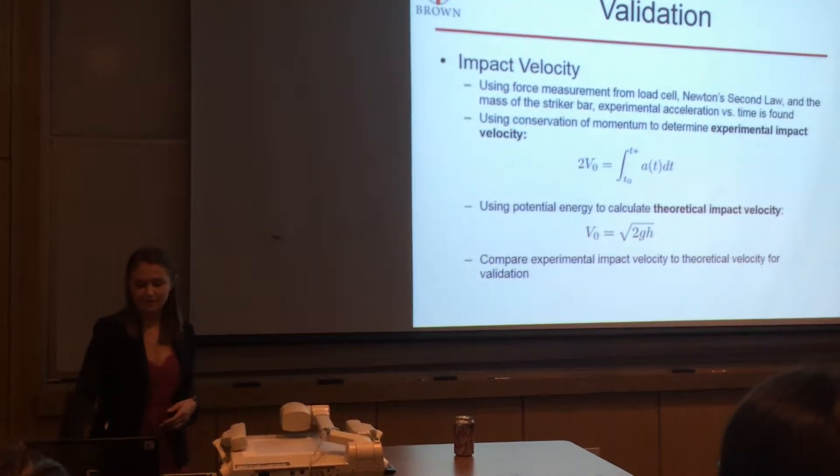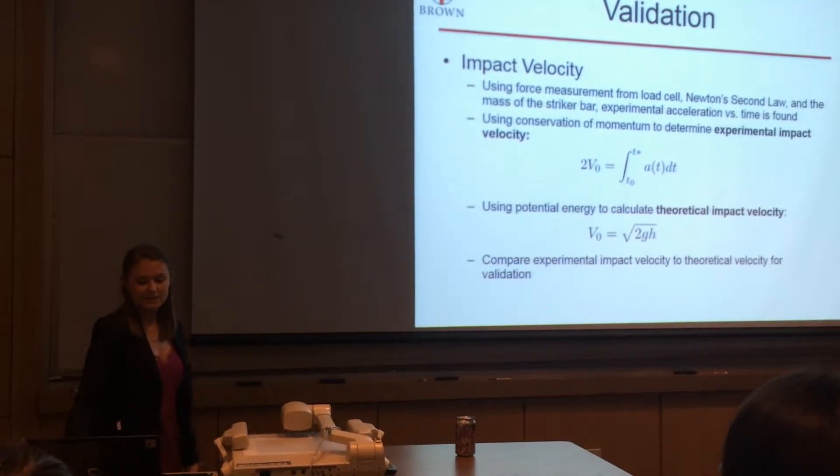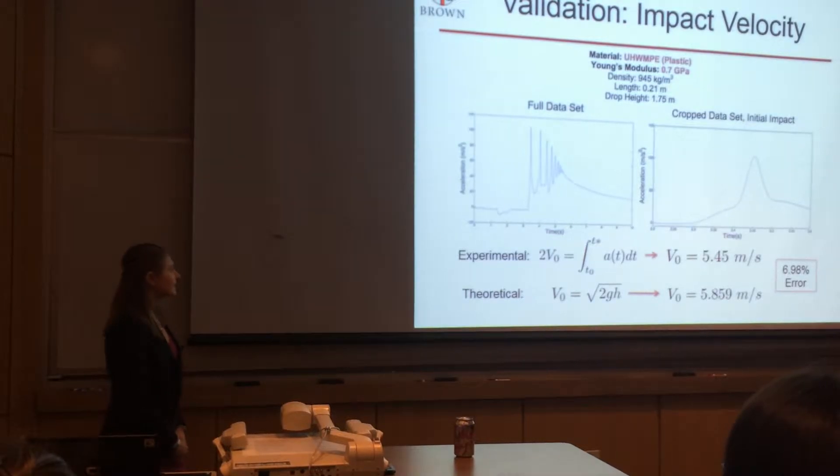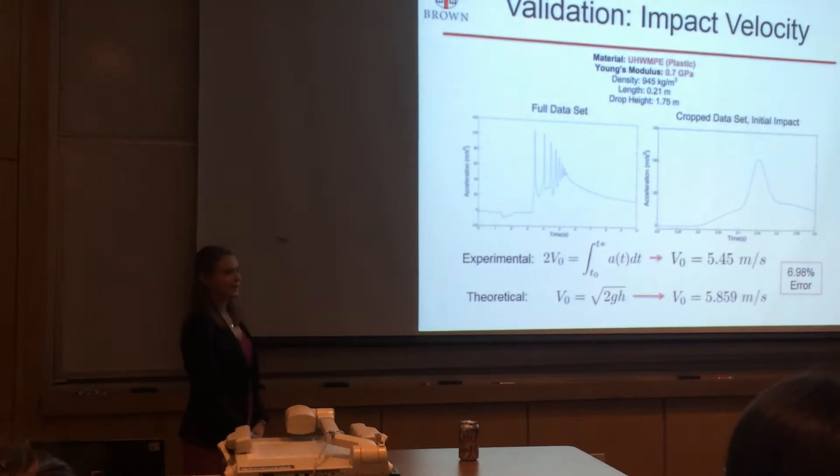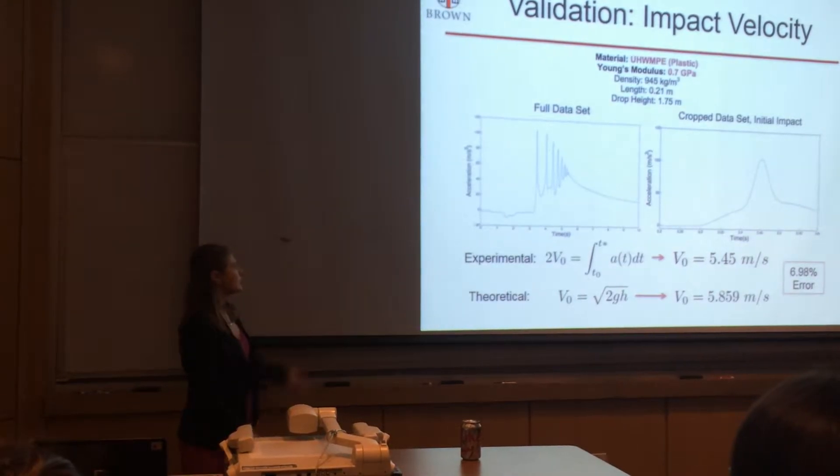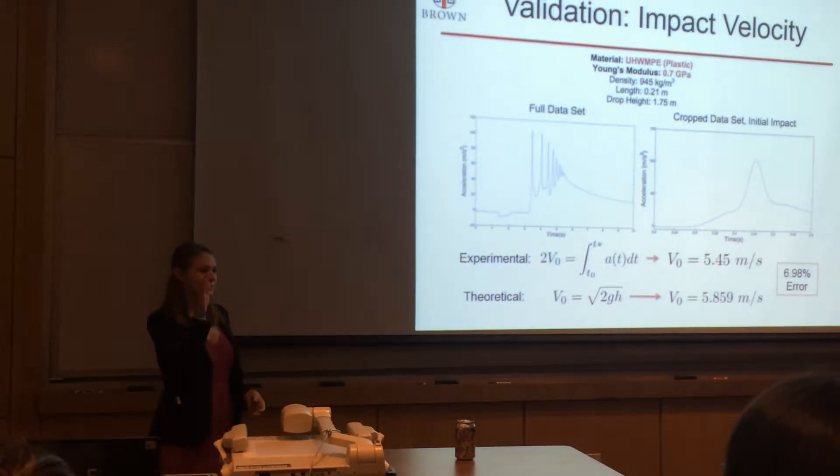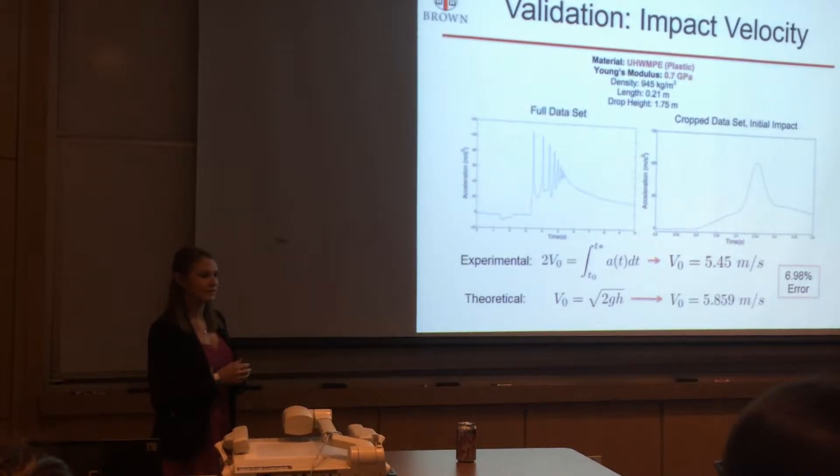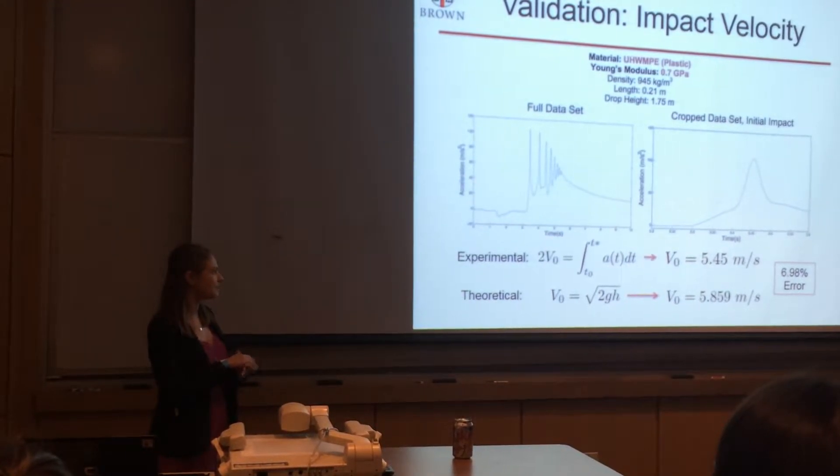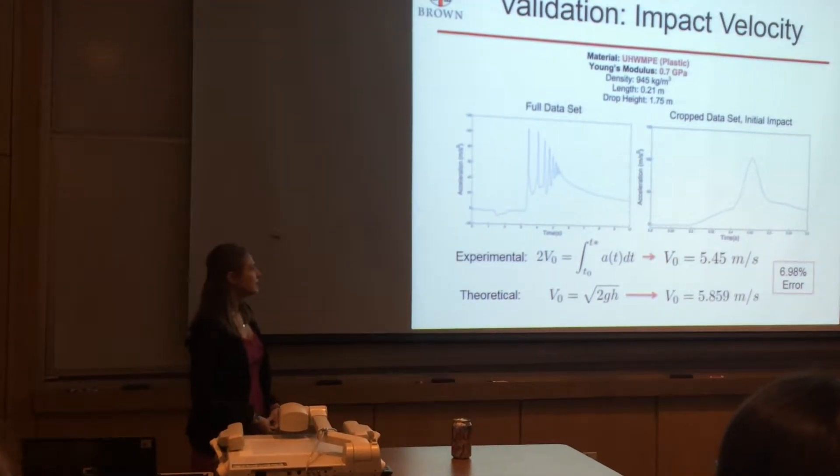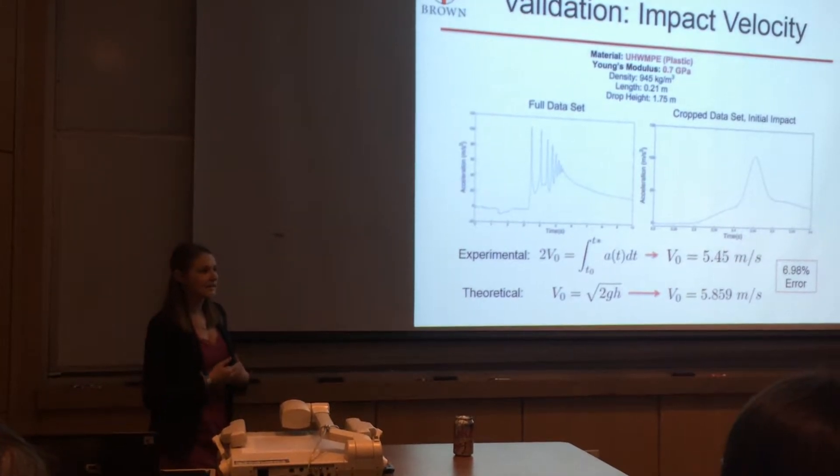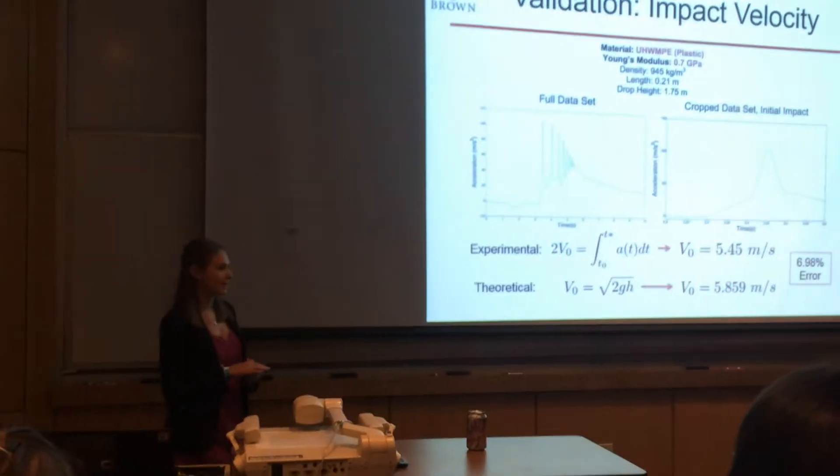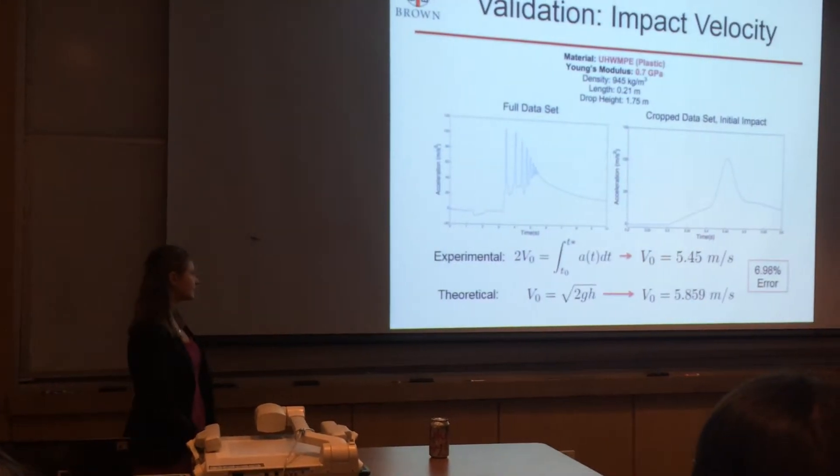I compared the experimental velocity and theoretical impact velocity using this data here which was for a plastic bar, ultra high weight molecular polyethylene. The full data set is shown on the left where the bar drops and then bounces several times with decreasing force each time until it just sits on the load cell and then the one on the right shows the data set cropped just for the first impact. In my test I didn't have a sample I just had the striker bar impacting the load cell directly for validation purposes.